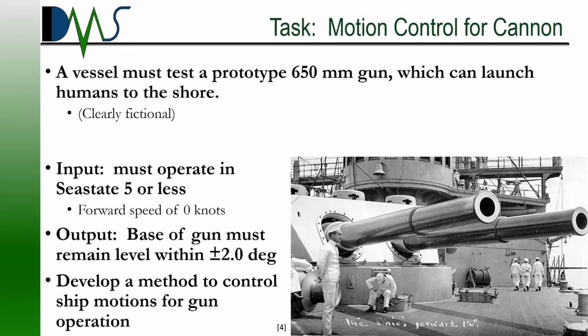How do we mount this gun and test this prototype on a ship? The input is that the cannon has to operate in sea state five or less, with the ship traveling at a forward speed of zero knots. And our output is that the base of that gun has to remain level within plus or minus two degrees. Your task would be to develop a method of motion control to allow gun operation. That's a very good definition for seakeeping analysis — we have a specified input, a target output, and we know what we're trying to work between.